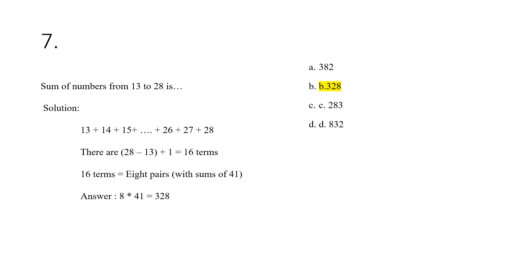For number seven, the sum of integers from 13 to 28. There are 28 minus 13 plus 1, which equals 16 terms. These 16 terms form 8 pairs, with sums of 41 — pairing 13 with 28, 14 with 27, and so on. Our final answer is 8 times 41, which equals 328.